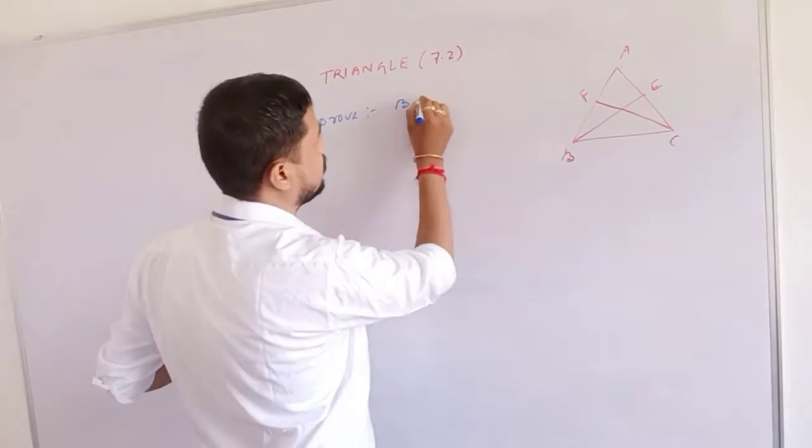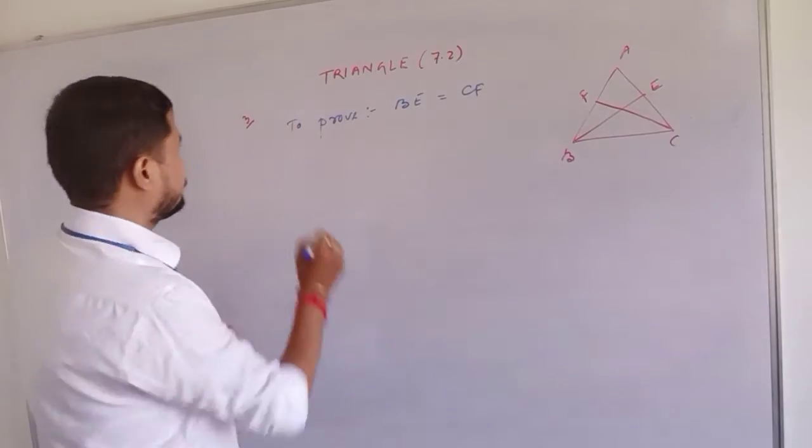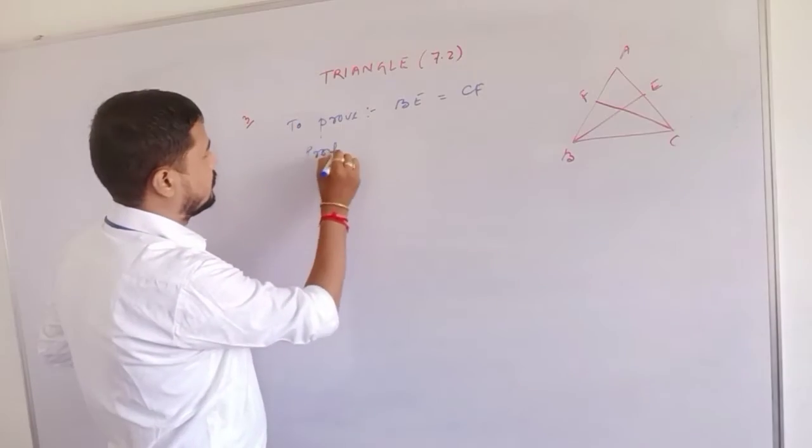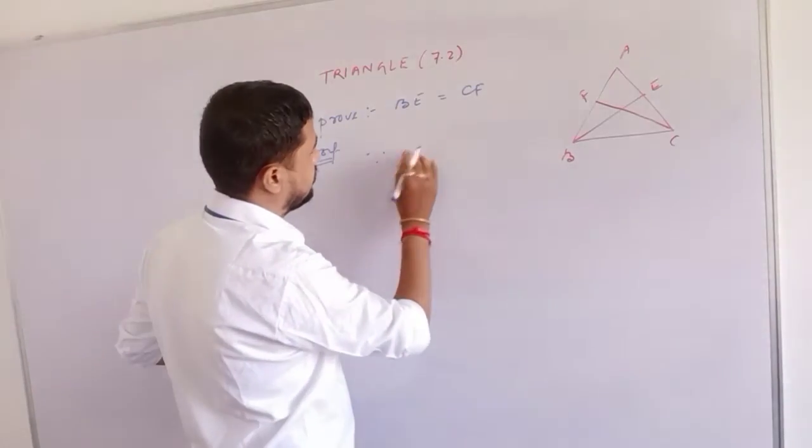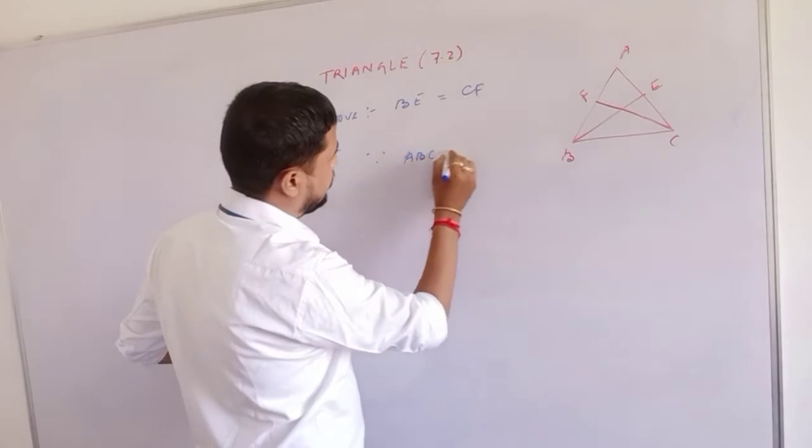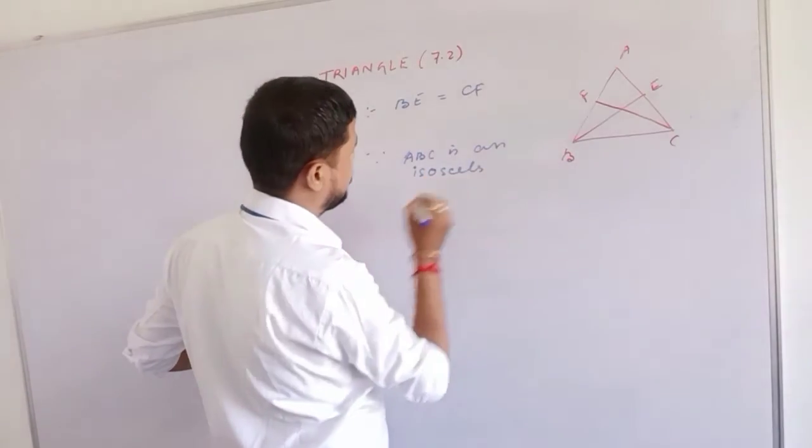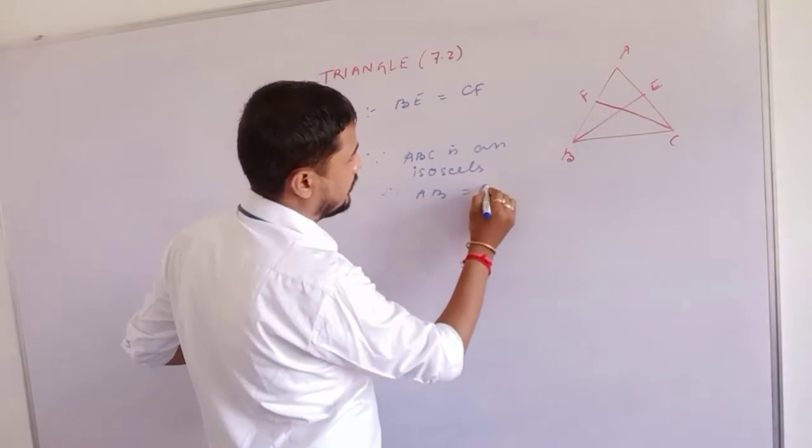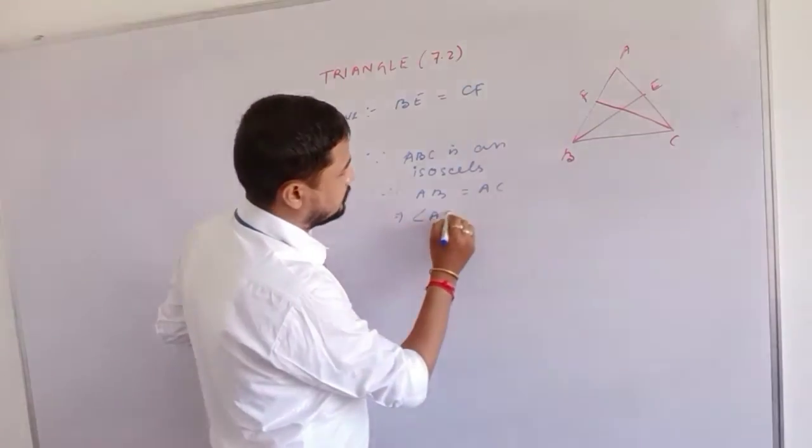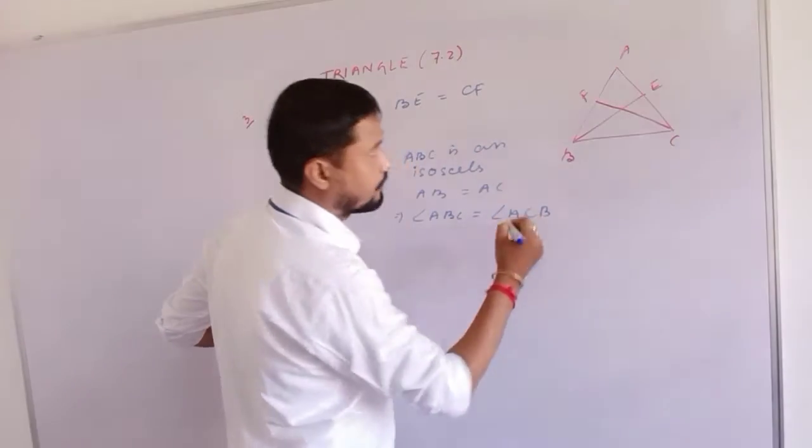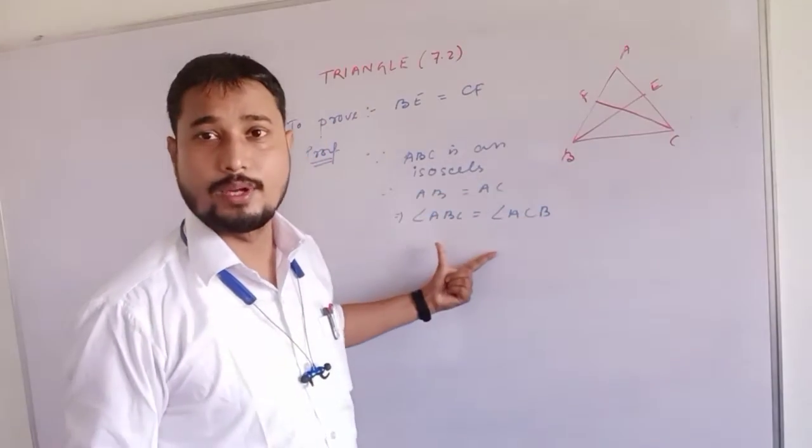To prove BE equal to CF. Since ABC is an isosceles triangle, therefore we can write AB equal to AC. Correct? AB equal to AC. Or we can write angle ABC equal to angle ACB.